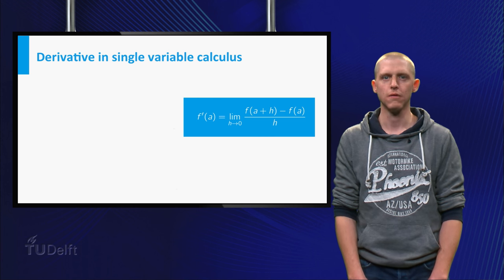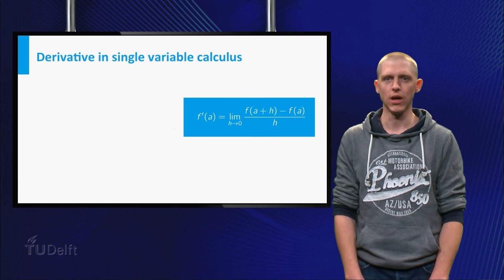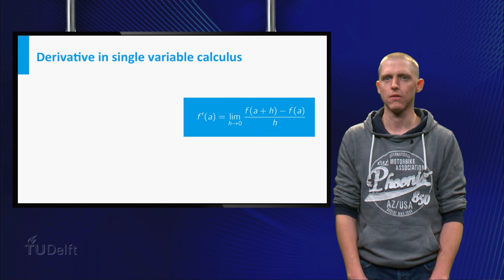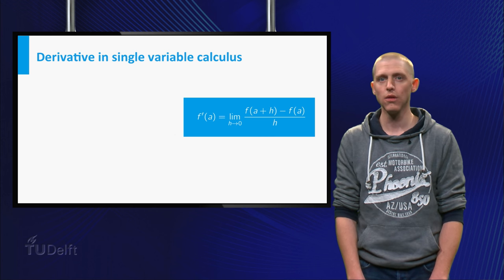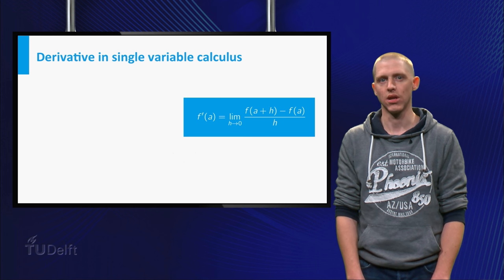Given a function f of a single variable x, the derivative of f at x equals a is defined as the limit of the difference quotient as h tends to 0.